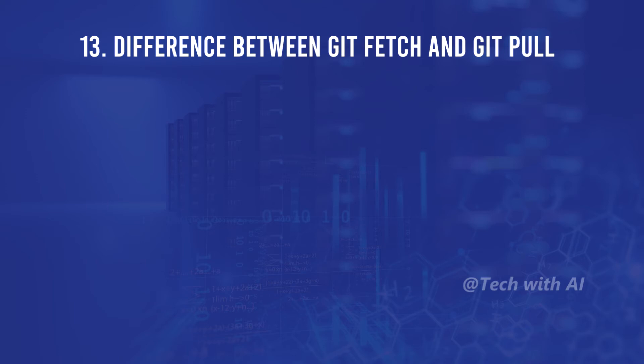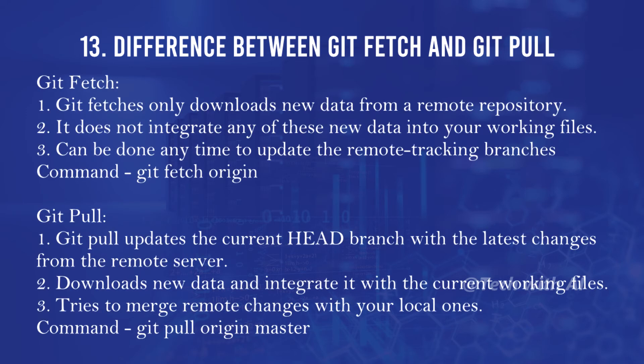What is the difference between git fetch and git pull? git fetch only downloads new data from a remote repository; it does not integrate any of this new data into your working files and can be done at any time to update the remote tracking branches. The command is git fetch origin. git pull updates the current HEAD branch, downloads new data, integrates it with the current working files, and tries to merge remote changes with your local ones. The command is git pull origin master.